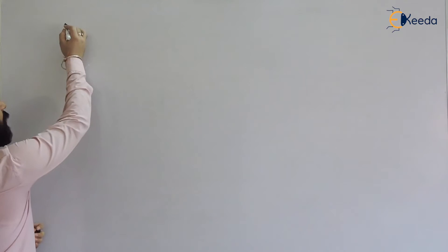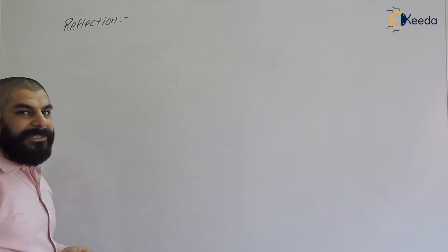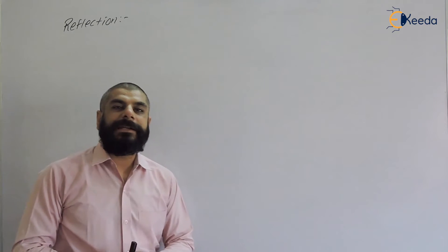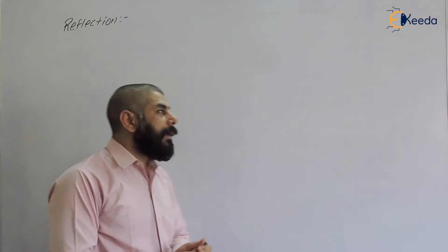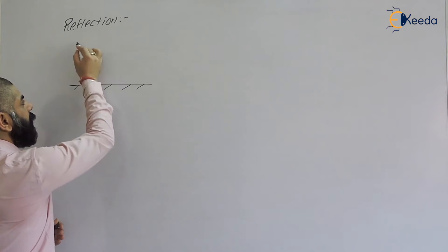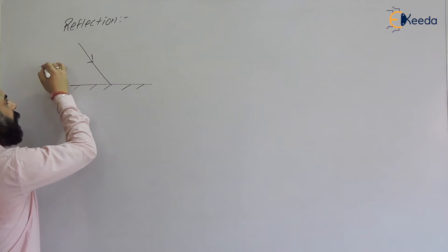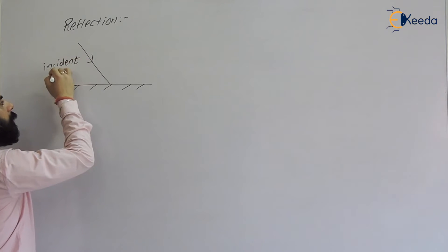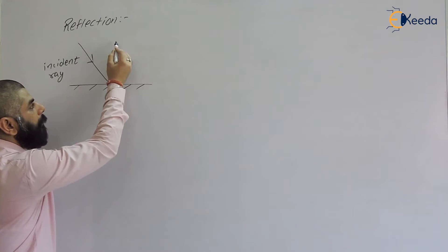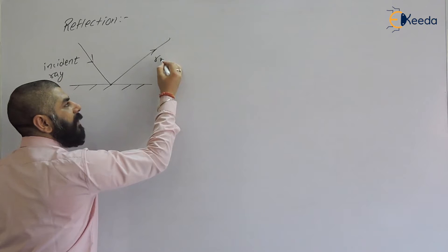What is reflection basically? Reflection is the bending of light back into the same medium when it strikes the surface of another medium. Suppose this is the mirror and light is coming. We are studying about the ray of light. This ray is called the incident ray. When it strikes the surface of the other medium, it is reflected back into the same medium. So this ray is called the reflected ray.